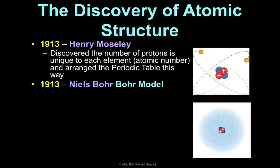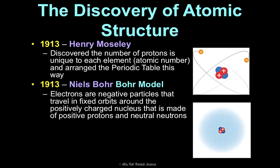Also in 1913 was Niels Bohr, who came up with the Bohr model. It says that electrons are negative particles that travel in fixed orbits — think of like the planets — around the positively charged nucleus. The nucleus is made of positive protons and neutral neutrons. He was right about the nucleus having positive and neutral particles and the negative electrons surrounding it, but not about the fixed orbits.